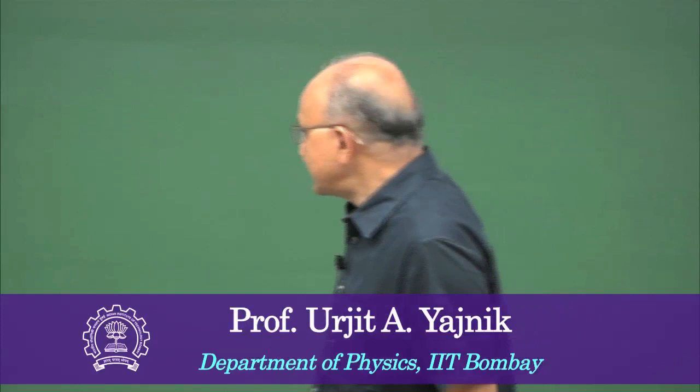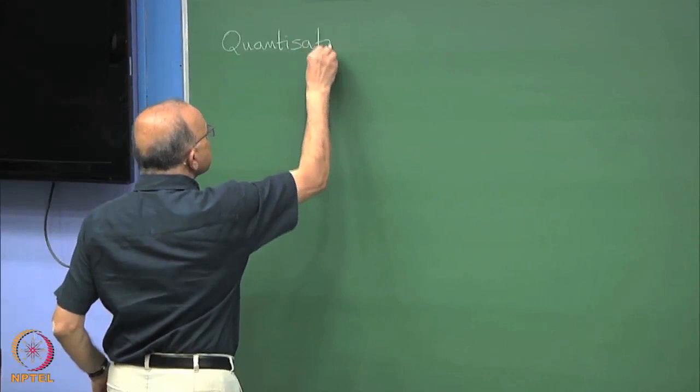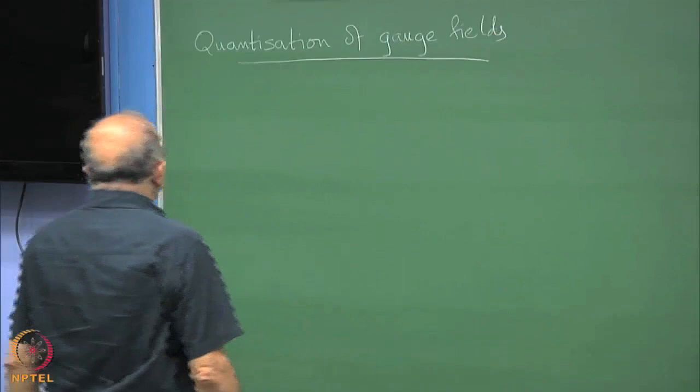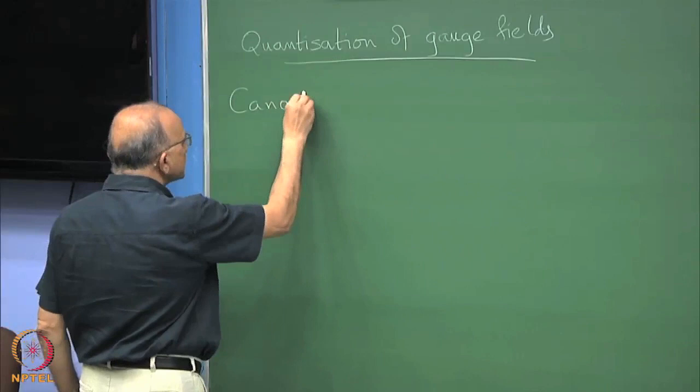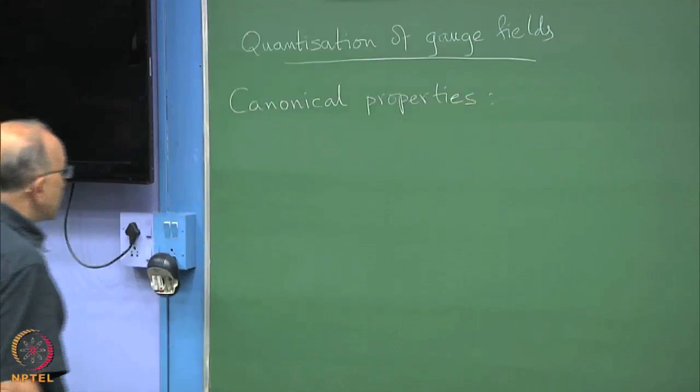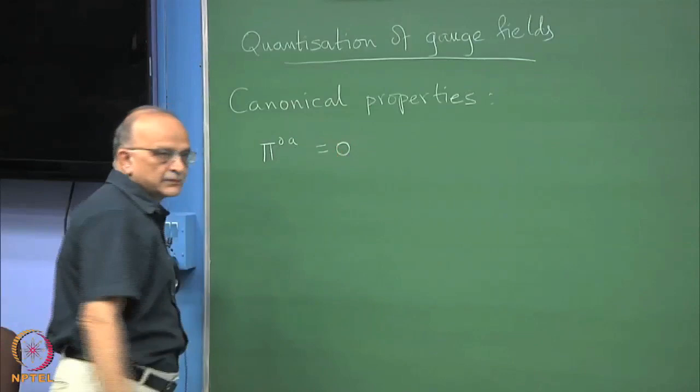Last time we saw the basic motivations for why we have to treat gauge field theories carefully. As we know, the quantization goes through canonical structure, and we saw that π₀^A are all equal to 0 for any gauge field.